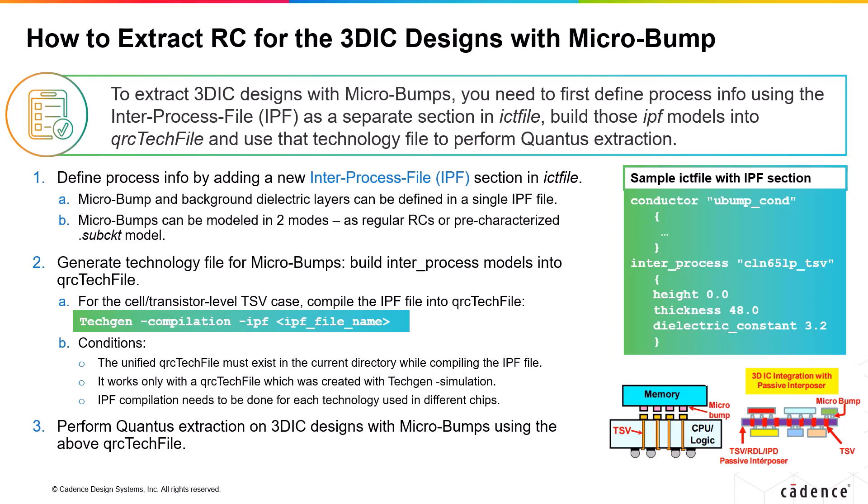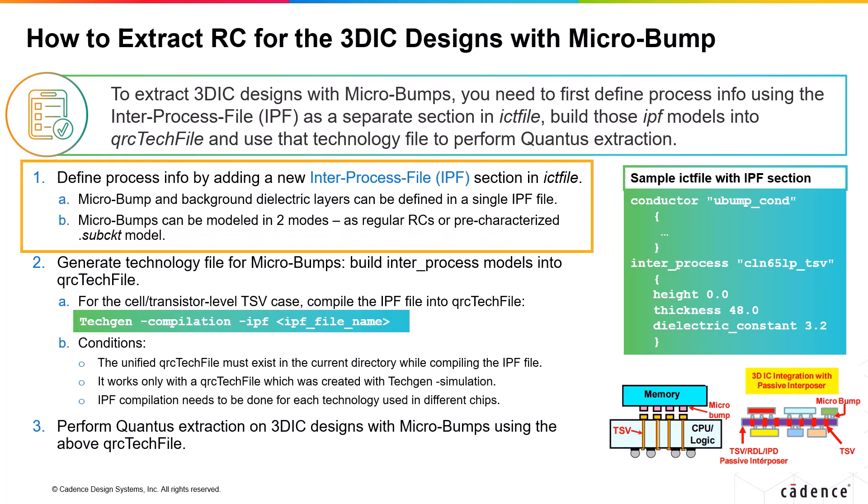In the inter_process section, you define the details of micro bumps like height, thickness, dielectric constant, etc. Micro bumps and the background dielectric layers can be defined in a single IPF file. Micro bumps can be modeled in two different modes: as regular RCs or as pre-characterized sub-circuit models.